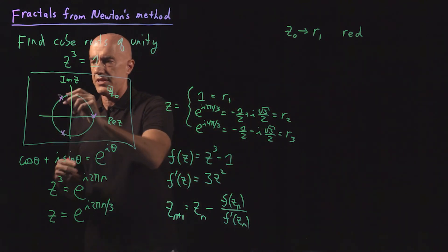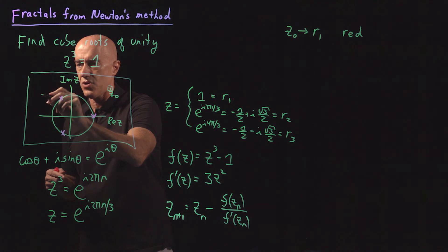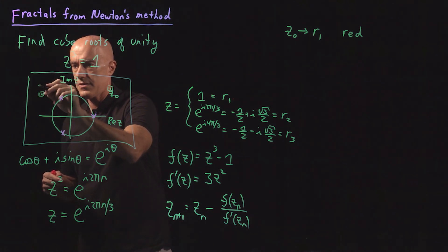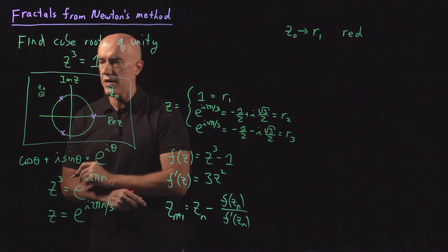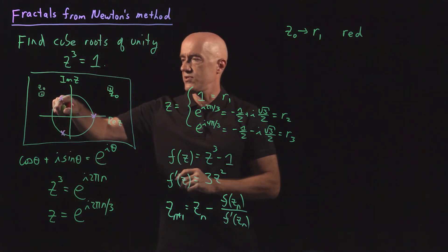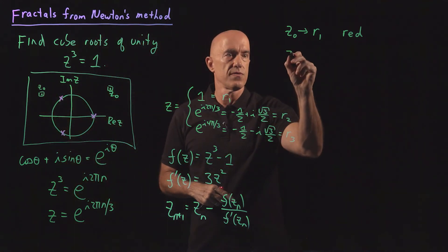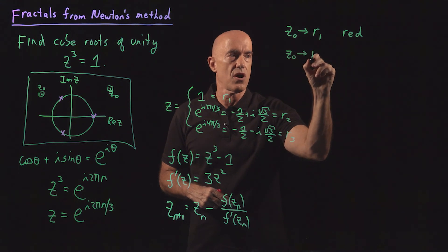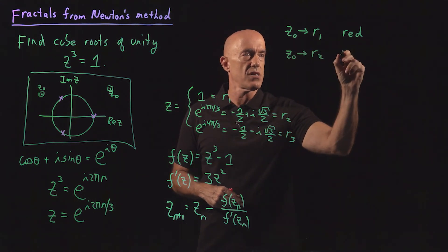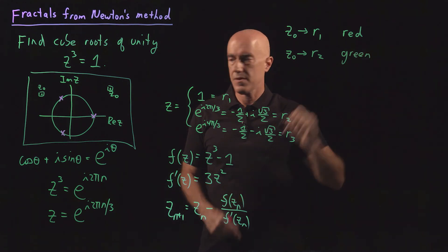On the other hand, we will have another z naught, say maybe we'll have a z naught over here. So that will be a different z naught. If that converges to r2, we're going to color the pixel green.